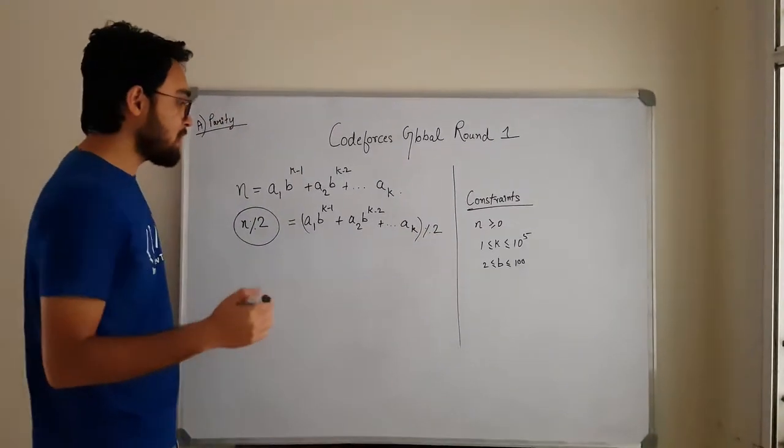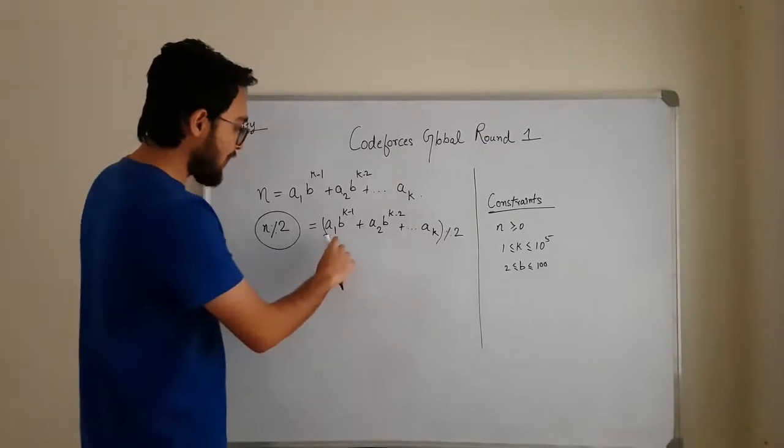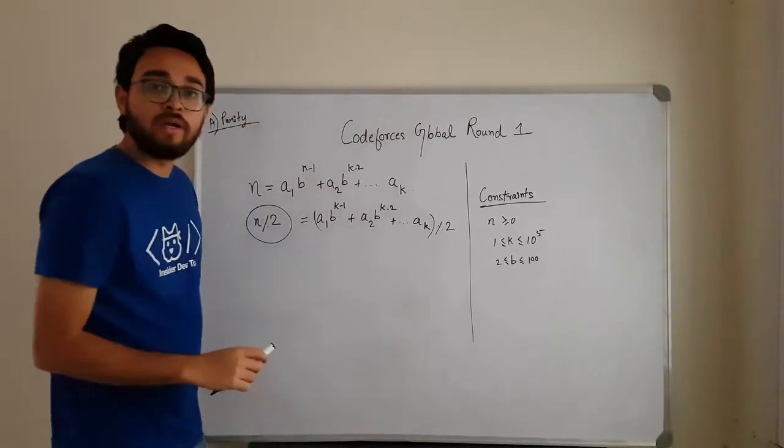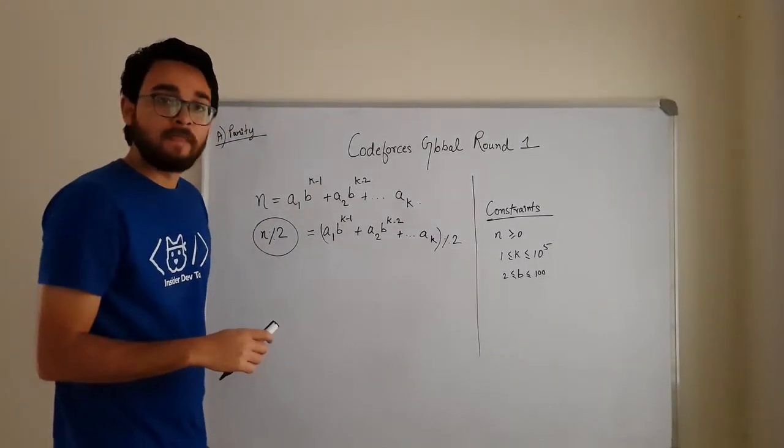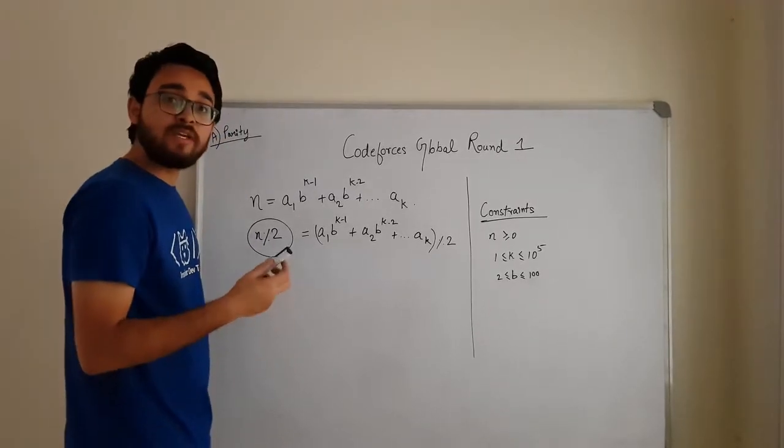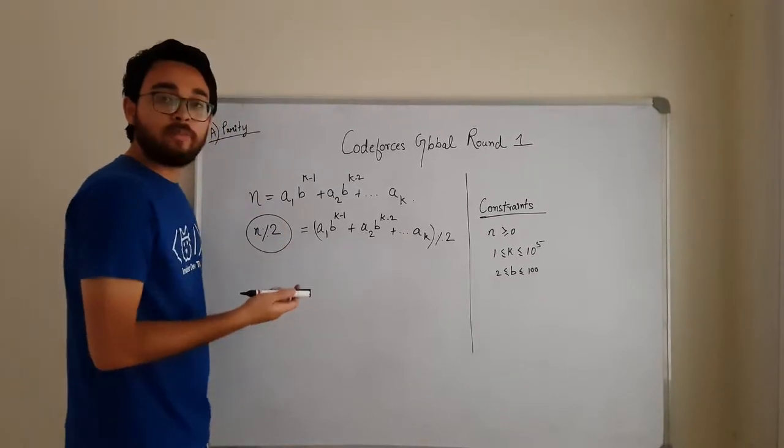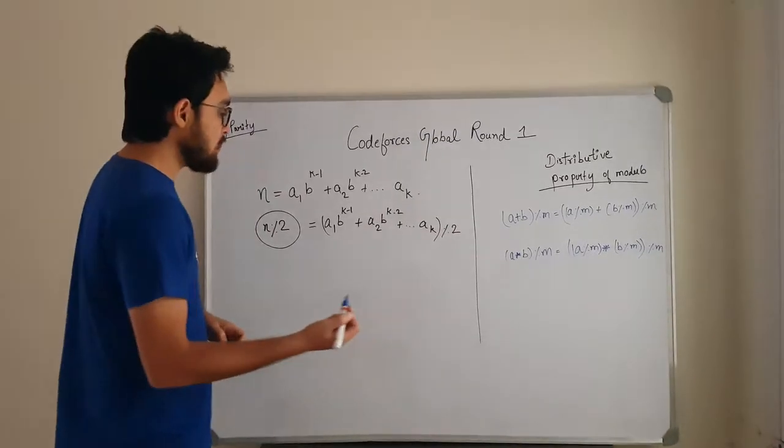Now the problem is, if you look into the constraints, you will see that if you calculate this whole number in one go, it will result in overflow. So what we can use is, we can use the distributive property of modulo to solve this problem.